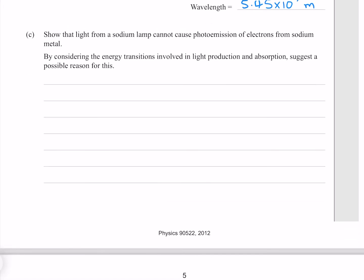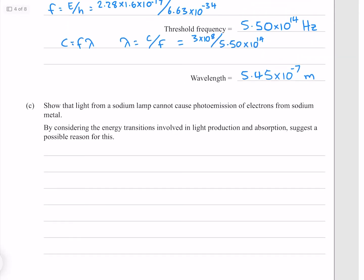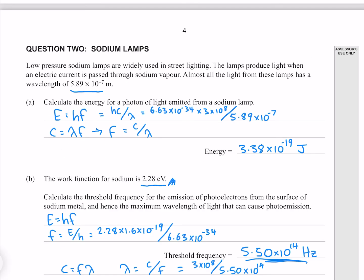Show that the light from a sodium lamp cannot cause photoemission of electrons from sodium metal. By considering the energy transitions involved in light production and absorption, suggest a possible reason for this. In order to cause photoemission, our wavelength of light needs to be greater than this frequency here, or in other words, shorter than this wavelength of 5.45 times 10 to the minus 7. Our sodium lamp, however, gives off light at a larger wavelength, so it will not produce photoemission.